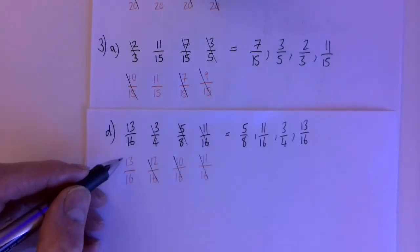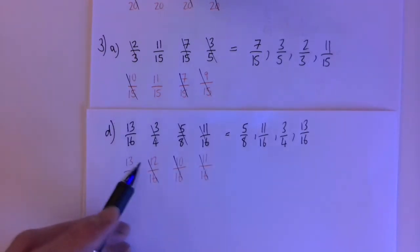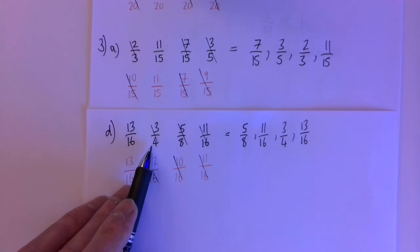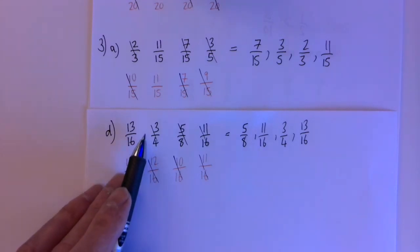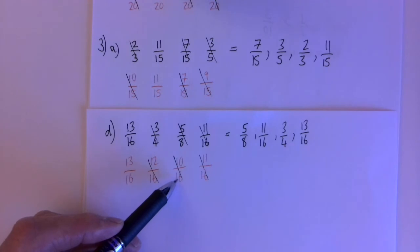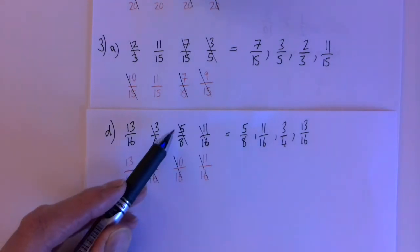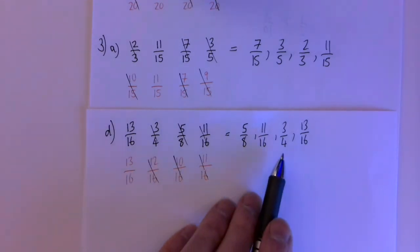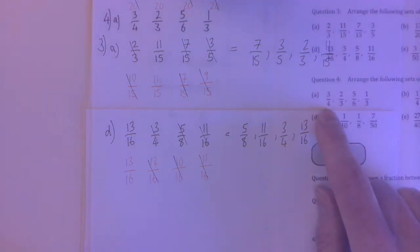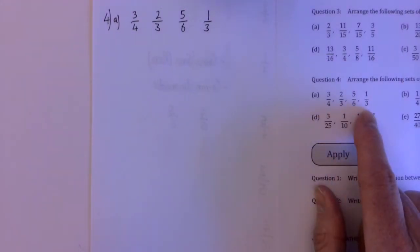For question 3d: 16 was the common denominator. The two fractions with denominator 16 didn't need to change. To turn 4 into 16 multiply by 4, so 3 times 4 gives 12 sixteenths. To turn 8 into 16 multiply by 2, so 5 times 2 gives 10 sixteenths. Then put them all in order.